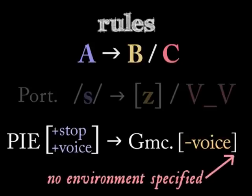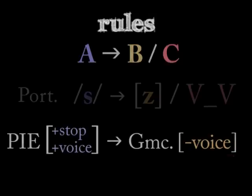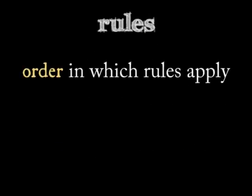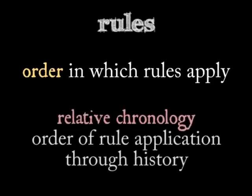The order and relationship of rules is crucial for understanding their significance in the development of a language. You can use your understanding of rules to establish a relative chronology, meaning that you can determine which changes took place earlier than others in a language's history.